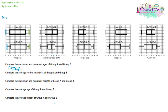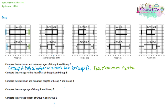Let's compare group A to group B. Group A has a higher minimum than group B. Then we can write a comparison for the maximum values — they're both at exactly the same place, both at 58. So we can write: the maximum values are the same. There are lots of different ways to write this; as long as you're getting this information across to the reader, that should be fine.